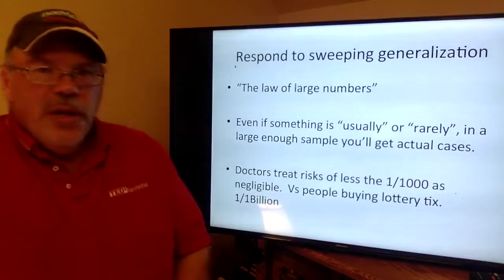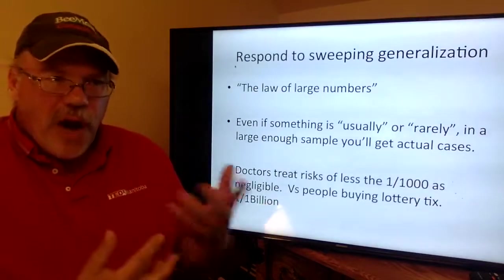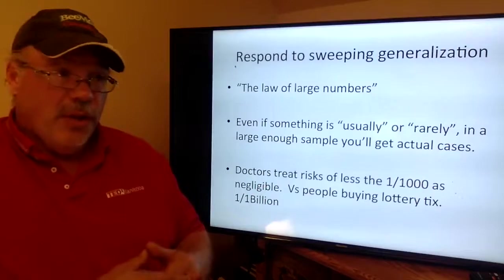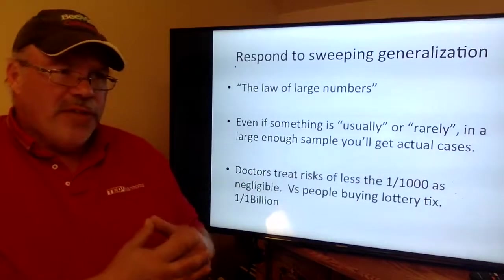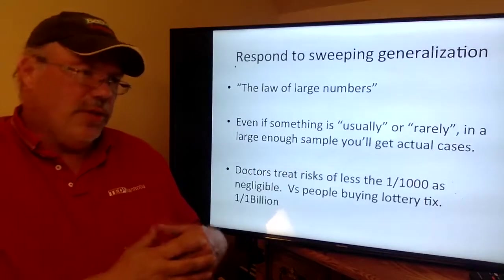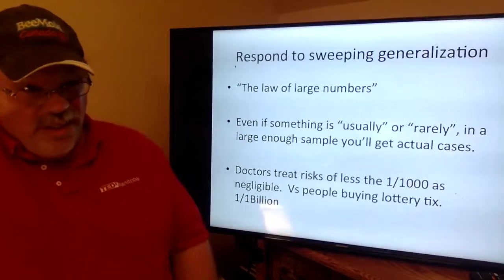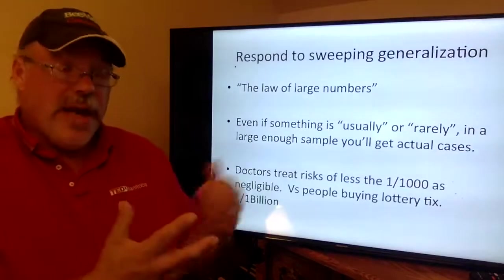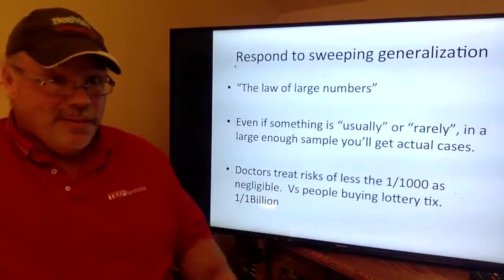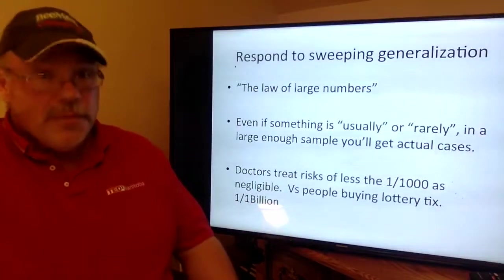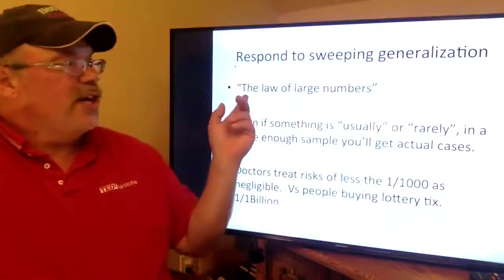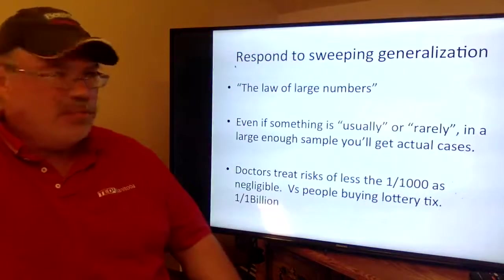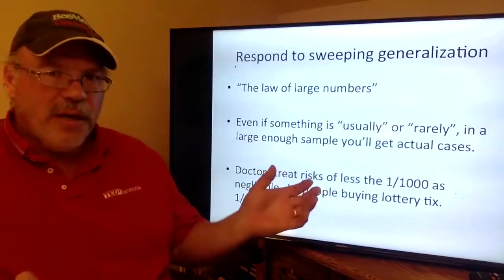When looking at sweeping generalizations, try to think of counterexamples based on the law of large numbers. Someone says the number of cases of police violence to innocent civilians is absurdly rare. Well, if it's only a hundredth of a percent and there are 35 million people in Canada, that means a couple thousand cases a year — not good. The law of large numbers says no matter how small a fraction something is, when it happens repeatedly you eventually get something measurable. Even if something is usually safe — like airplanes — if there are thousands taking off every day and they're only usually safe, they're going to crash. We need it to be guaranteed safe.